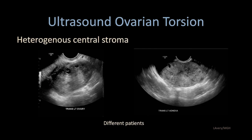Torsed ovaries are oftentimes enlarged and heterogeneous in echo texture. They may be hypoechoic, hyperechoic, or some combination — a very heterogeneous central stroma.